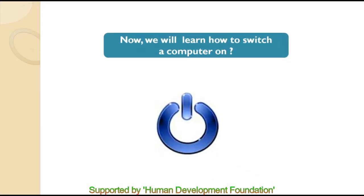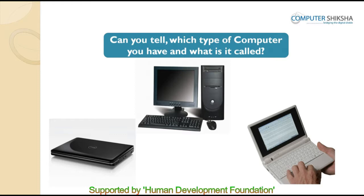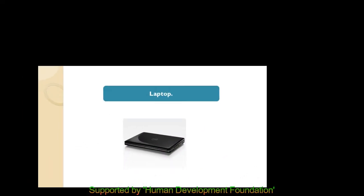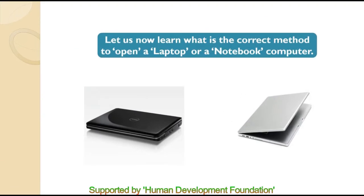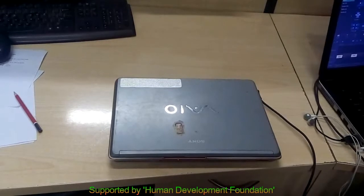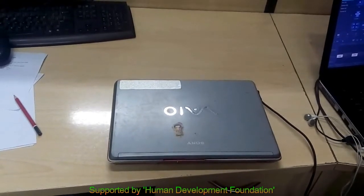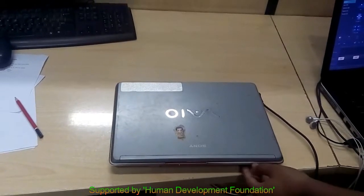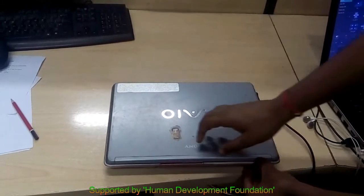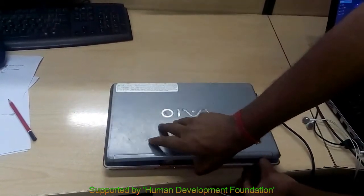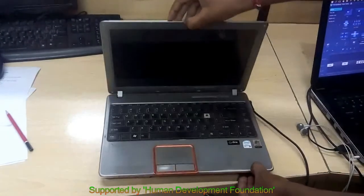Now we will learn how to switch on a computer. After looking at the given picture, can you tell which type of computer you have? You would either have a laptop, a desktop, or a notebook computer. Let us learn the correct method to open a laptop or a notebook computer. A laptop or notebook computer has two parts. Press down on the lower part of the computer using your left hand, then using your right hand slowly lift the upper portion and keep it open as shown in the picture.